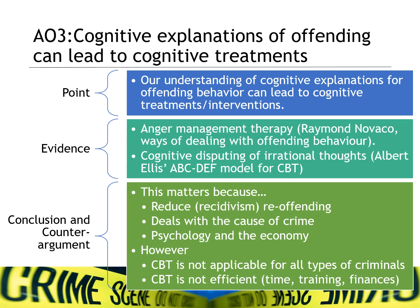There are also real links between psychology and the economy, because we can prevent crimes by offering treatment to those displaying irrational thinking, meaning we spend less money housing individuals in prison and on re-offending. However, cognitive behavioural therapy is not applicable for all types of criminals — there's a difference between irrational thinking and deeply depraved behaviour. CBT also costs time, money, and finances, and requires trained practitioners, so we have to weigh up the costs against the benefits.